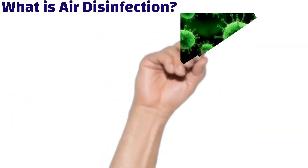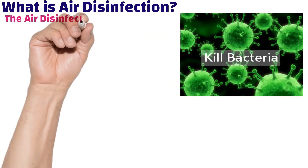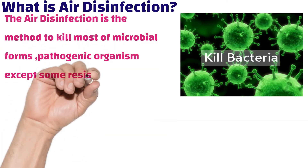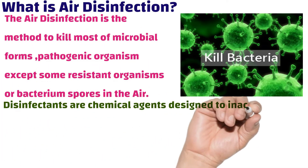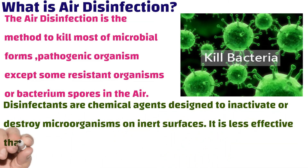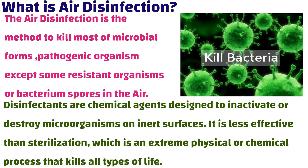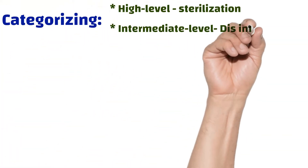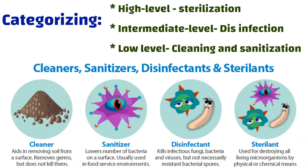First, what is air disinfection? Air disinfection is the method to kill most microbial forms and pathogenic organisms, except some resistant organisms or bacterium spores in the air. Disinfectants are chemical agents designed to inactivate or destroy microorganisms on inert surfaces. It is less effective than sterilization, which is an extreme physical or chemical process that kills all types of life.